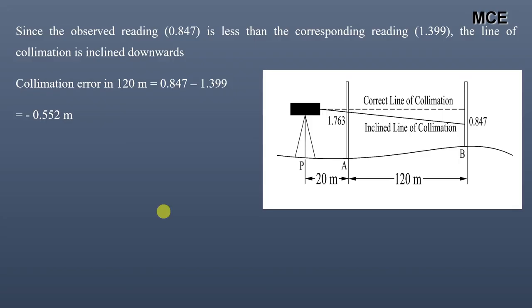So the collimation error in 120 meters is 0.847 minus 1.399 which equals minus 0.552 meters. Collimation error in 20 meters is given by the proportional triangle: minus 0.552 times 20 divided by 120 which equals minus 0.092 meters.